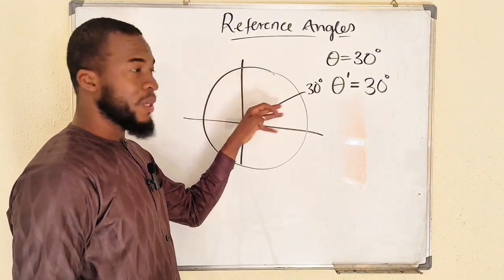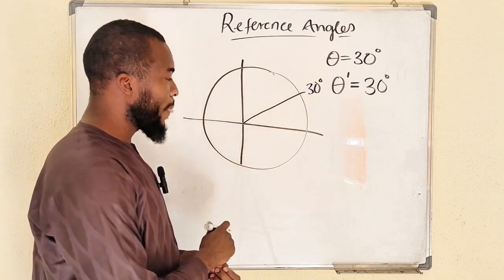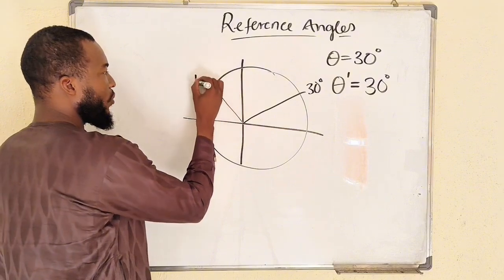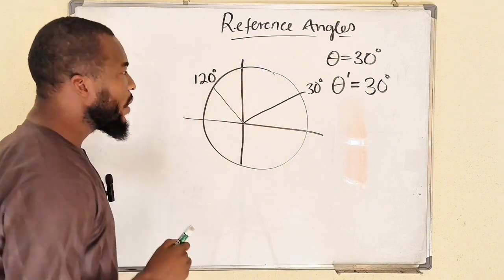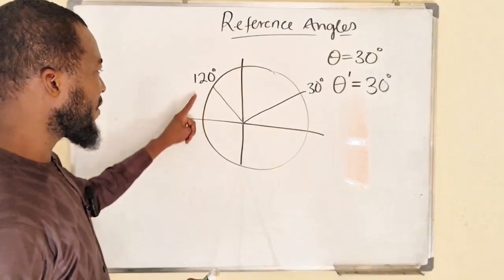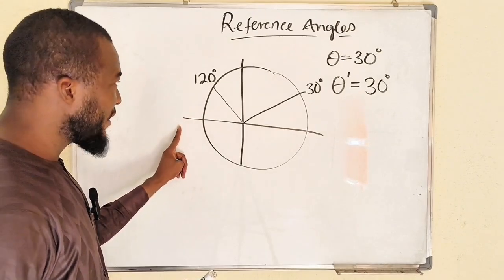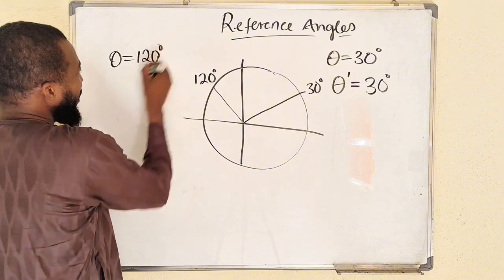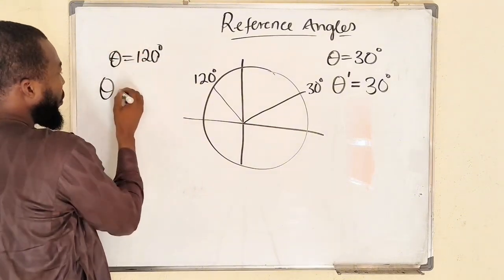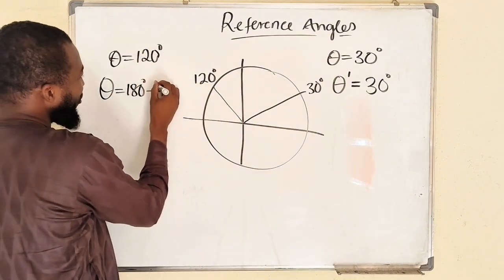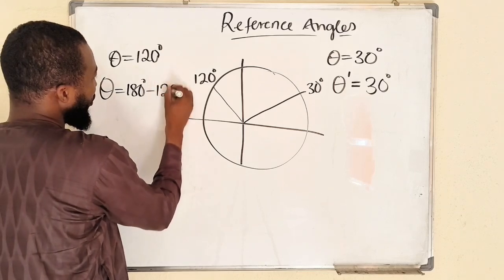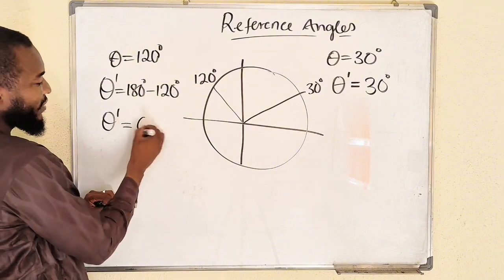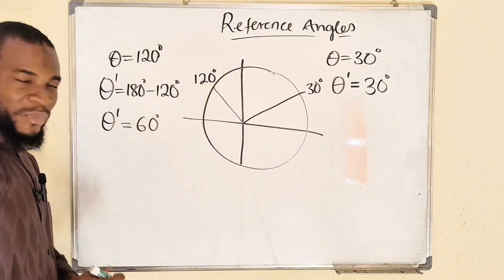If you are somewhere like 120 degrees, you can see that it is less than 180 degrees and falls in quadrant two. So if theta equals 120 degrees, its reference angle theta prime will be equal to 180 degrees minus 120 degrees, and the reference angle will be 60 degrees.